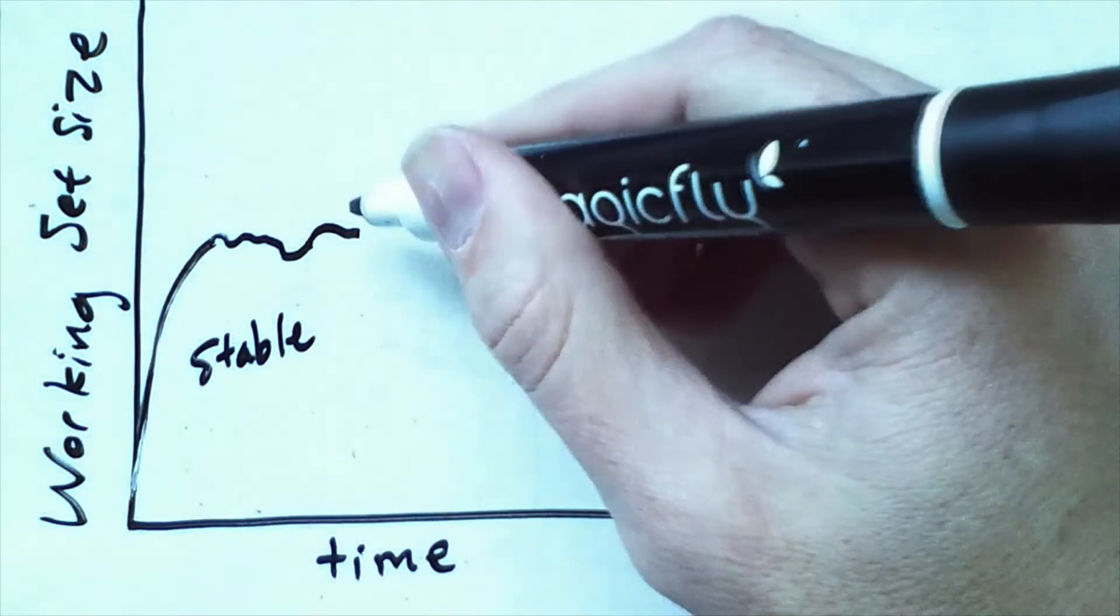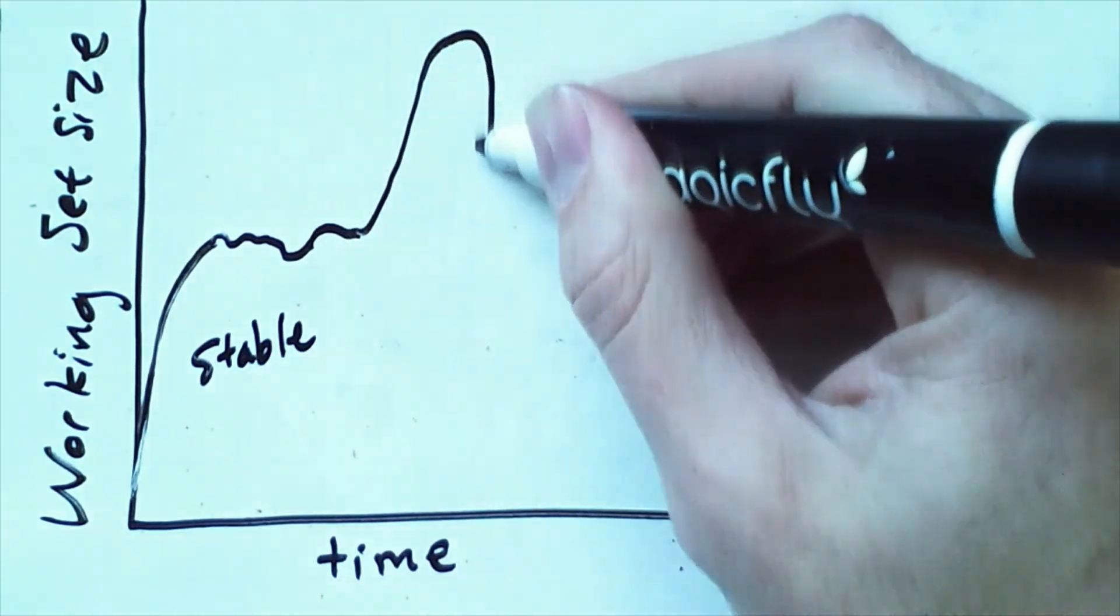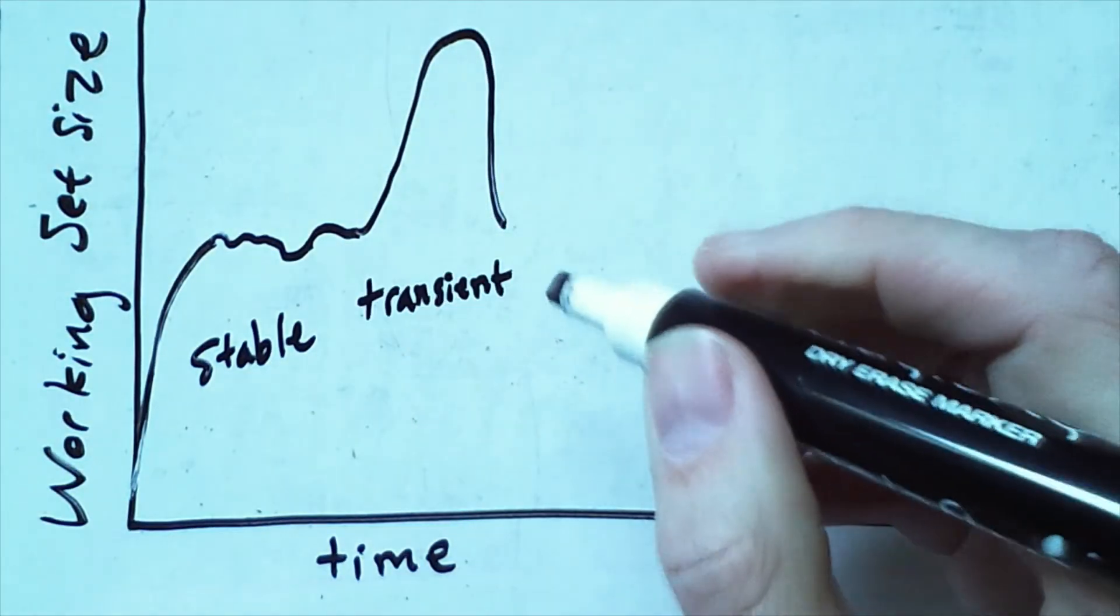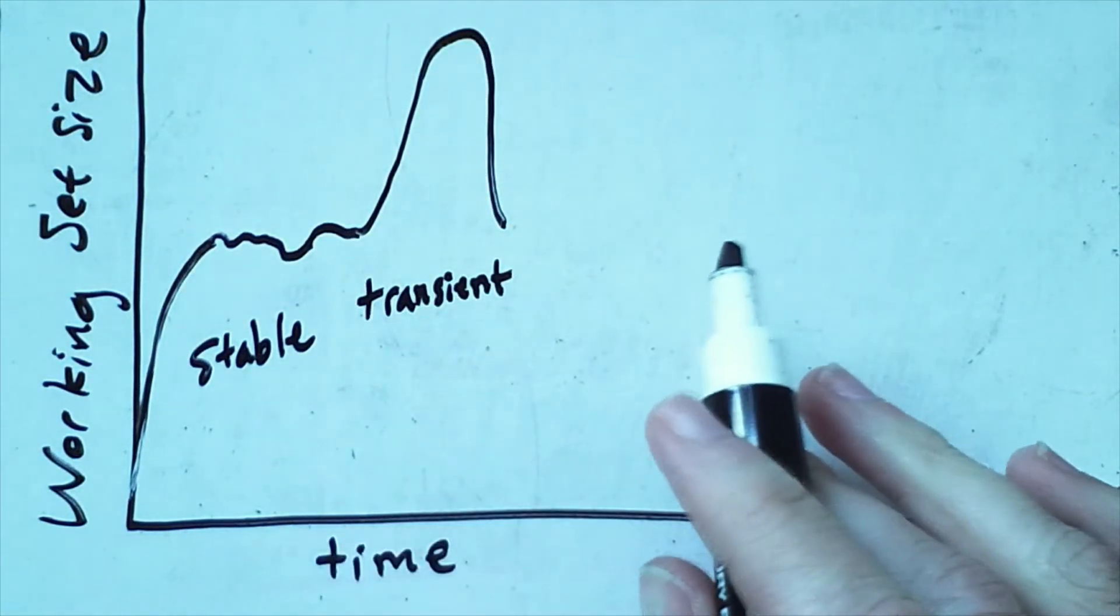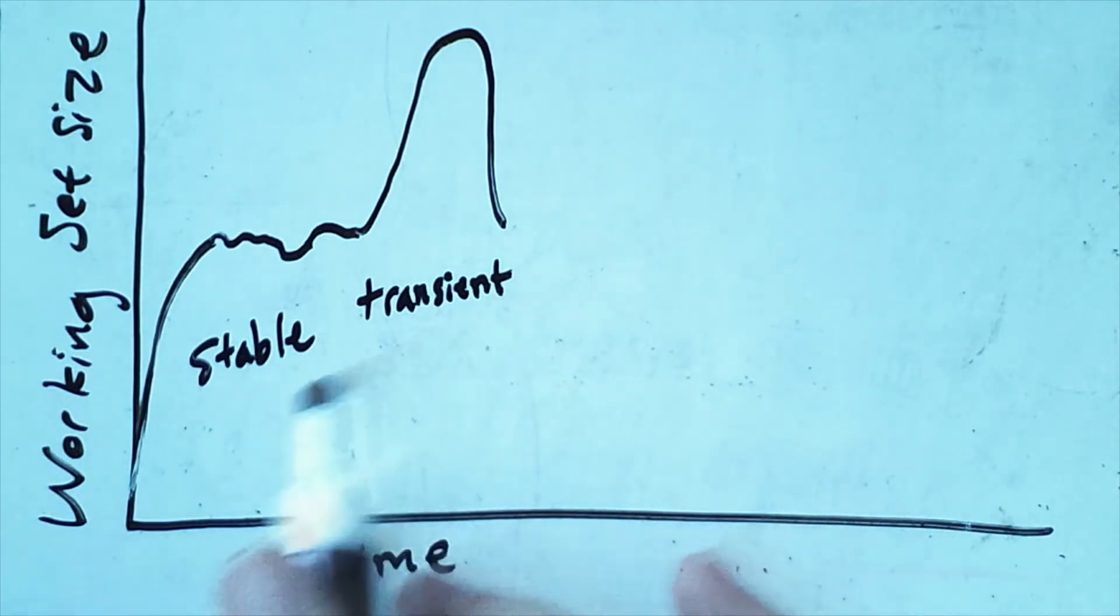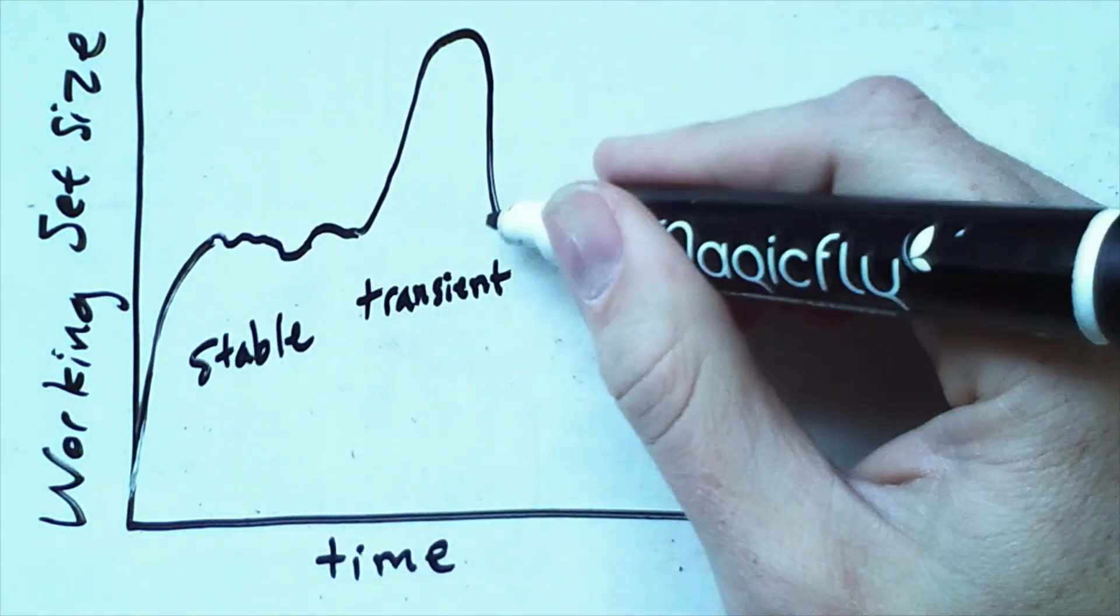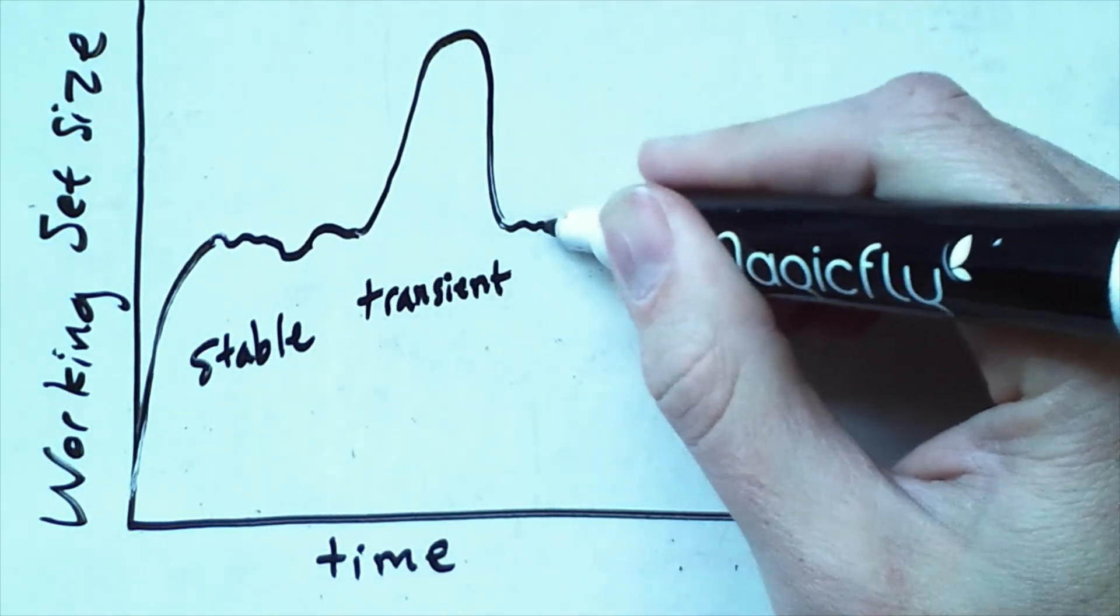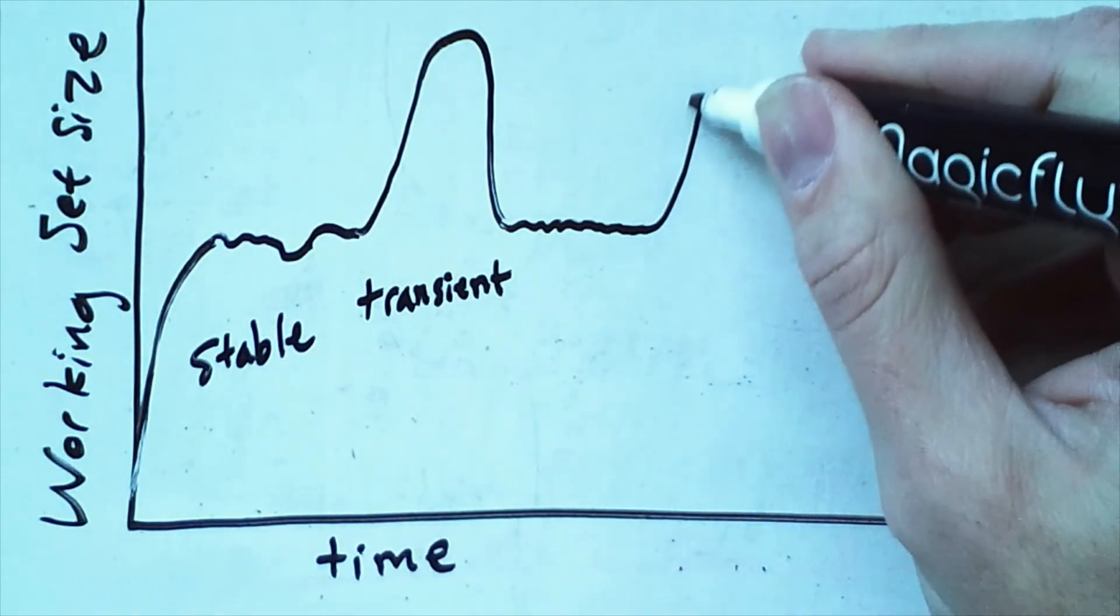And then we would only allow a process to execute if its whole working set was resident in memory. Unfortunately, managing the resident set isn't quite as easy as that for various reasons. One is that picking the right value of delta isn't obvious. There's no real clear way to do it.